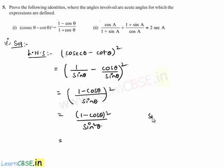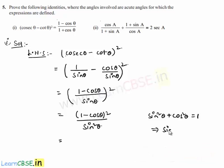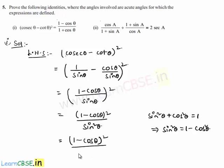From the identity sin² θ + cos² θ = 1, we get sin² θ = 1 - cos² θ. Substituting here, it becomes (1 - cos θ)² divided by (1 - cos² θ).